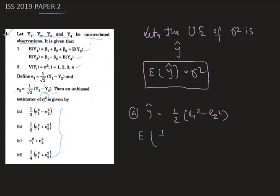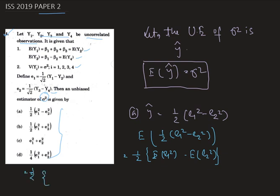We compute E[(1/2)(e1² − e2²)]. This equals (1/2)[E(e1²) − E(e2²)]. Now E(e1²) can be written as Var(e1) + [E(e1)]², and similarly E(e2²) = Var(e2) + [E(e2)]².